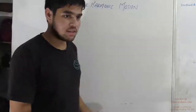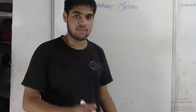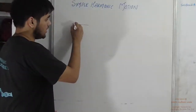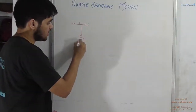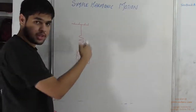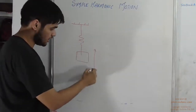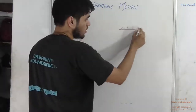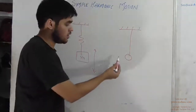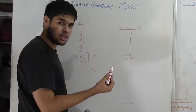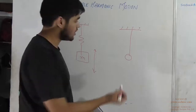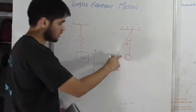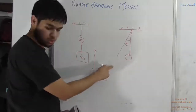So till now we have studied the basic simple harmonic motions and we have discussed two types of examples. First was a mass attached with a spring moving in the vertical direction. Another example was of a pendulum, where we learnt that a pendulum executes simple harmonic motion only when theta is small.